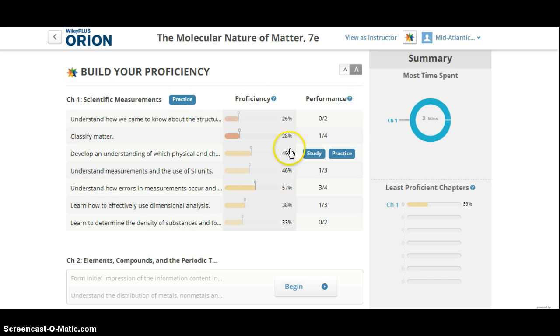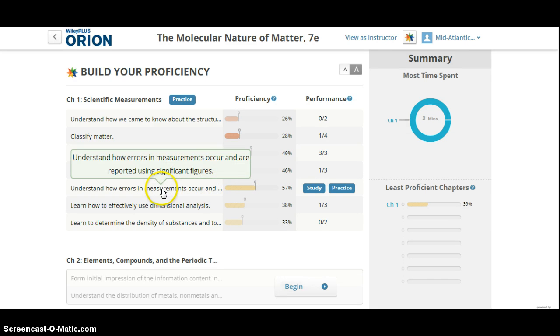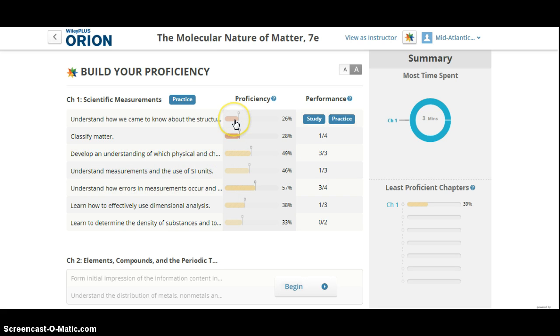Once a diagnostic is started and some data is populated, you can quickly see, the student can quickly see exactly where they are having the biggest issues. So in this case, this student does not have a tremendous amount of issue with understanding how errors and measurements occur. However, they can see that their proficiency is the lowest with understanding how we came to know about the structure of the atom.